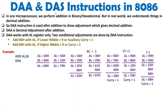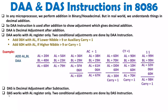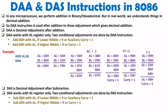Similarly, DAS — Decimal Adjustment after Subtraction — works in the same way. It also works with AL only. Two conditional adjustments apply: subtract 06H from AL if the lower nibble is greater than 9 or if auxiliary carry occurred during subtraction; subtract 60H from AL if the higher nibble is greater than 9 or if the carry flag is 1. I encourage you to practice DAS examples yourself, since the process mirrors what we have done for addition.